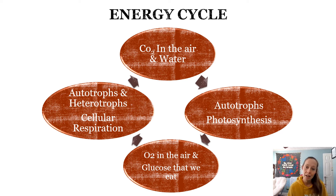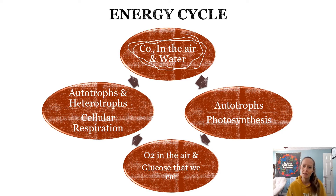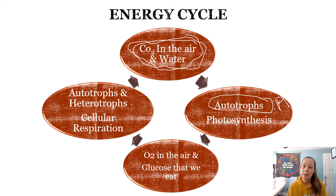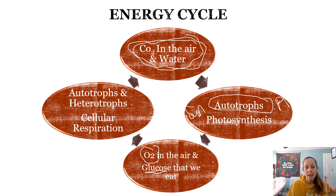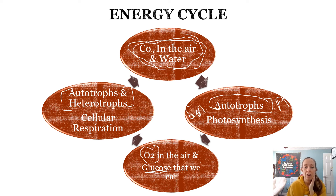This is the energy cycle. Starting at the top: there's carbon dioxide in the air and water. Autotrophs — which make their own food, like plants — do photosynthesis. They take in CO2 and water, and give out oxygen that we breathe and glucose that we eat, using sunlight. That oxygen and glucose go into autotrophs and heterotrophs, which do cellular respiration in their mitochondria. Cellular respiration produces carbon dioxide, water, and most importantly, ATP.